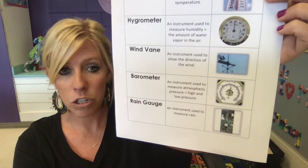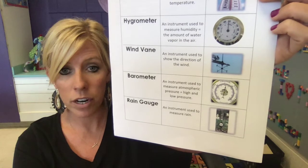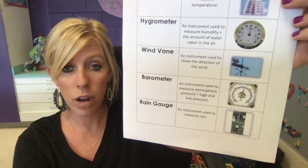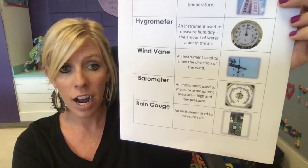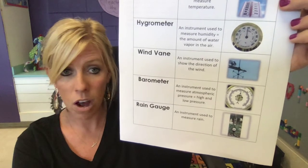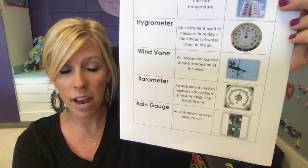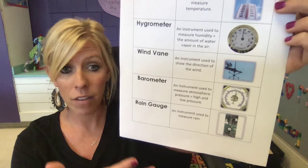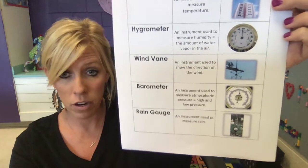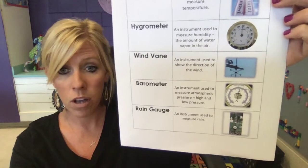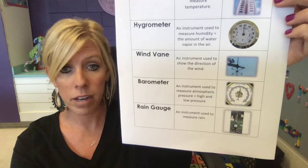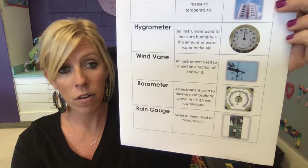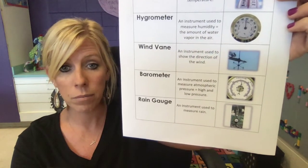Next, the barometer — an instrument I think is very cool. It measures pressure. There are high and low pressure systems all the time, and we're going to learn about how that really affects our weather. A barometer is very important because depending on what kind of systems you have out there, it depends on the weather you're going to have.